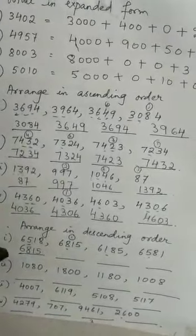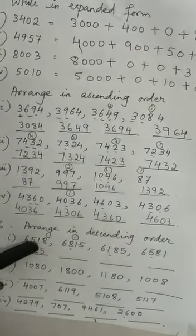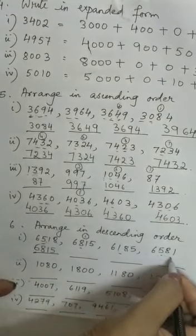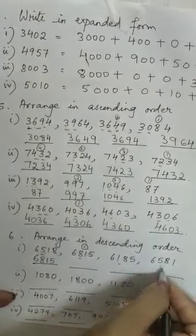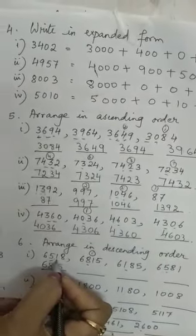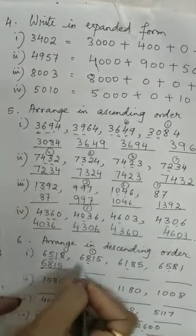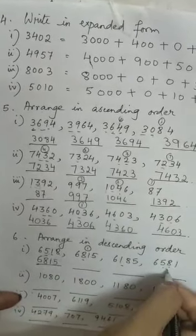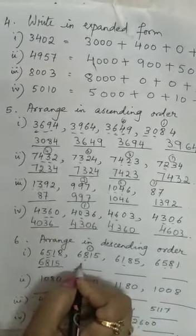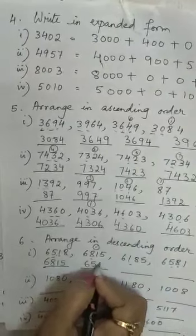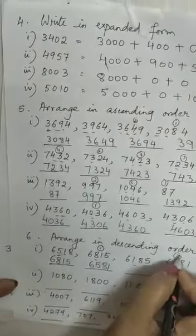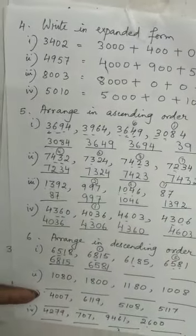Next we will see: here also 6518 has 5 in the hundreds place, and the last number 6581 also has 5 in the hundreds place. Now we will move to the tens place. In the tens place, here is 1 and here is 8. So 8 is greater than 1, so 6581 will come in the second place.